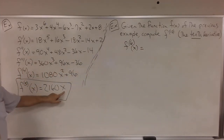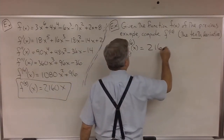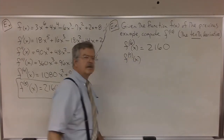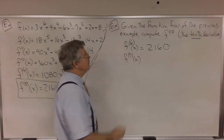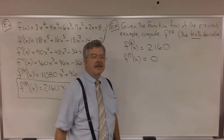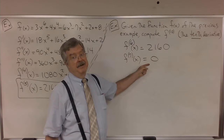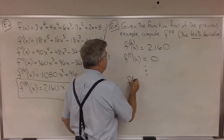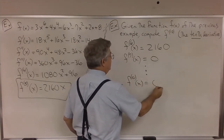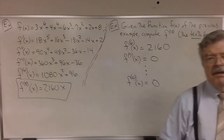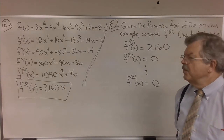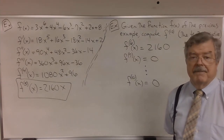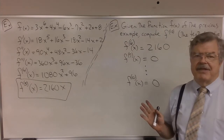The 5th derivative was 2160x, which is just a constant times x. So the 6th derivative is 2160. And the 7th derivative — what's the derivative of a constant? It's 0. And what do you think we get when we compute the derivative of 0? 0. So all of the succeeding derivatives are going to be 0.